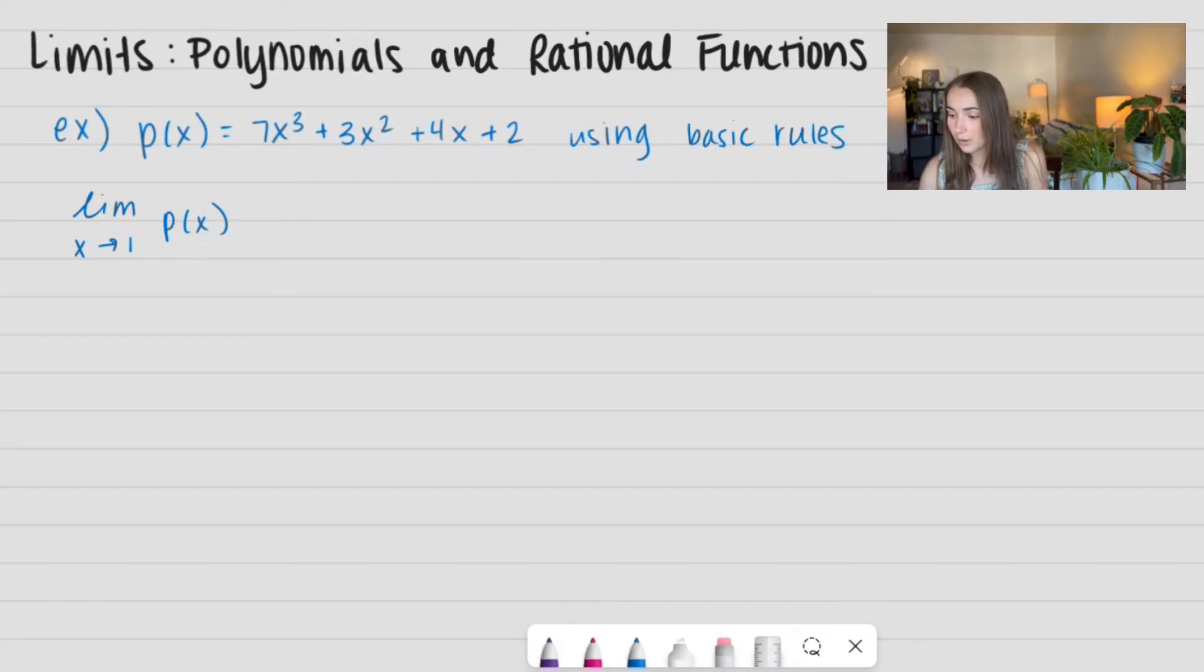If you're wondering what a polynomial is, it is a function that looks like this: 7x cubed plus 3x squared plus 4x plus 2. First of all, we're going to evaluate the limit just using our basic functions. So, let's go ahead and plug this in. We get the limit as x approaches one of our entire polynomial, 7x cubed plus 3x squared plus 4x plus 2.